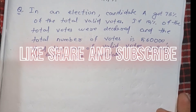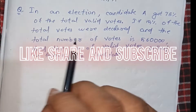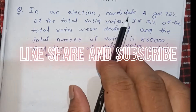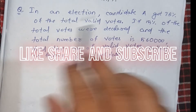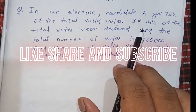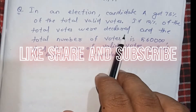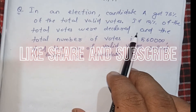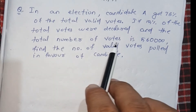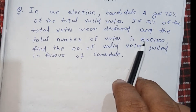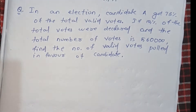Hello guys, welcome back to another video of AJ classes. Today's question is: in an election, candidate A got 75% of the total valid votes. If 15% of the total votes were declared invalid and the total number of votes is 5,60,000, find the number of valid votes that the candidate got.